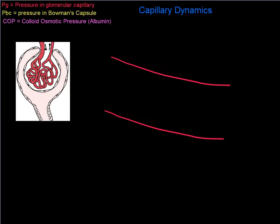Let's look at some pressures inside the glomerulus. On the left you see a diagram of the glomerular capillary and of Bowman's capsule, and on the right we've taken one little piece of that capillary and moved it out so that we can look at the pressures. Let's look at some of the pressures in Bowman's capsule.